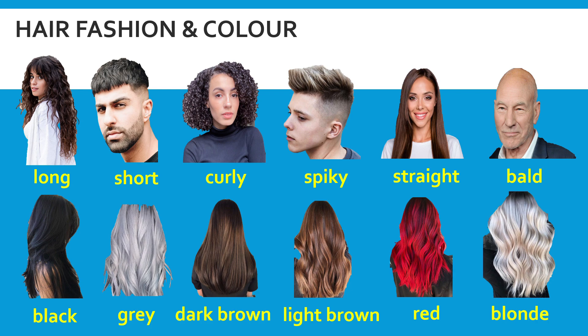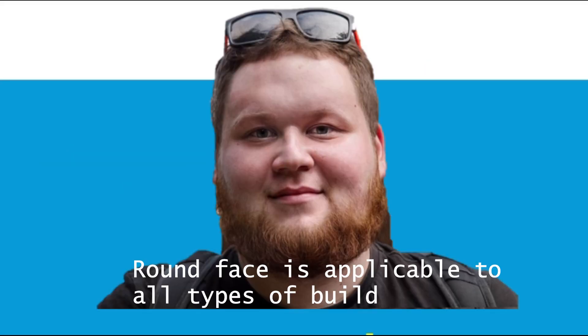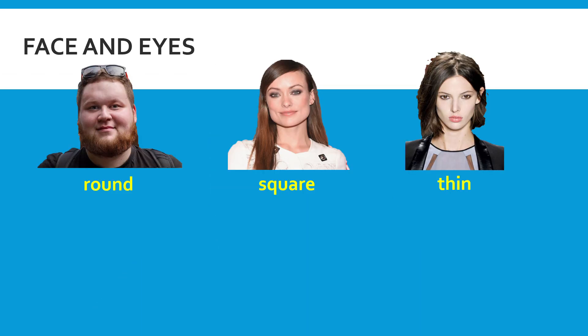We can also describe people from the aspect of face and eyes. Words for face shape include round, square, and thin. Bear in mind that a round face is not only for overweight or obese people — a person with a slim figure can have a round face as well.